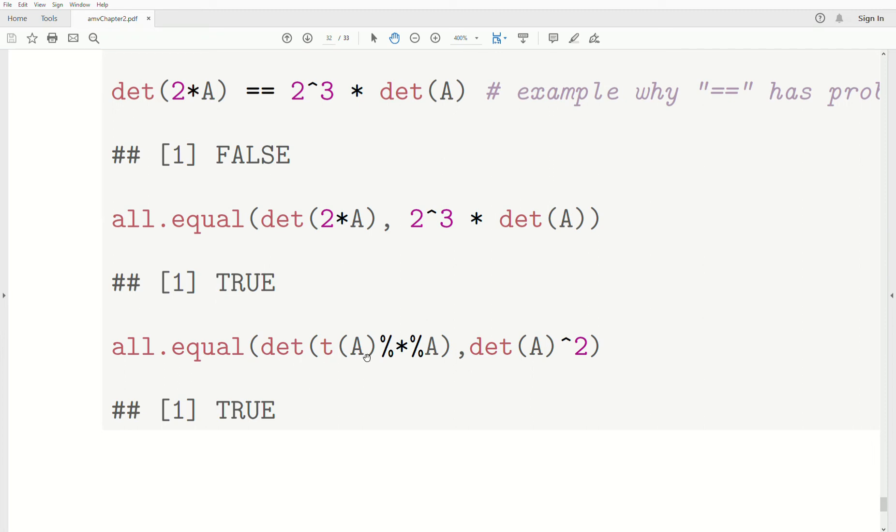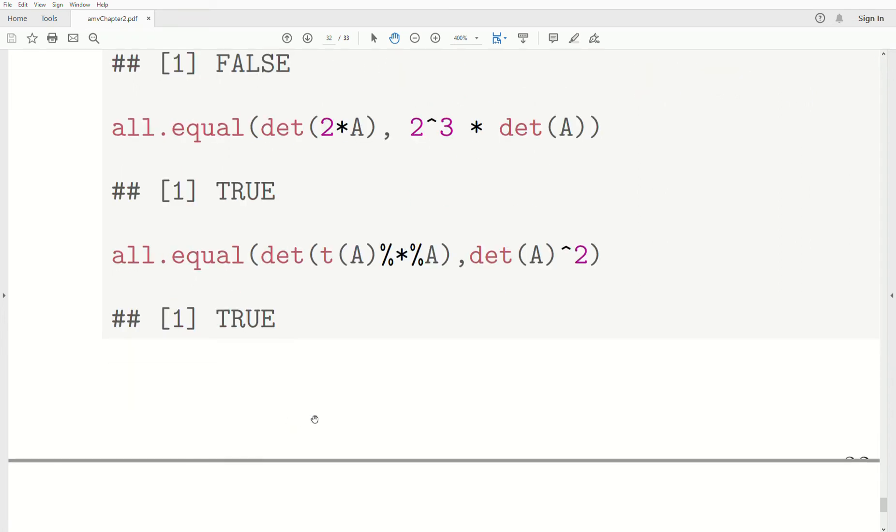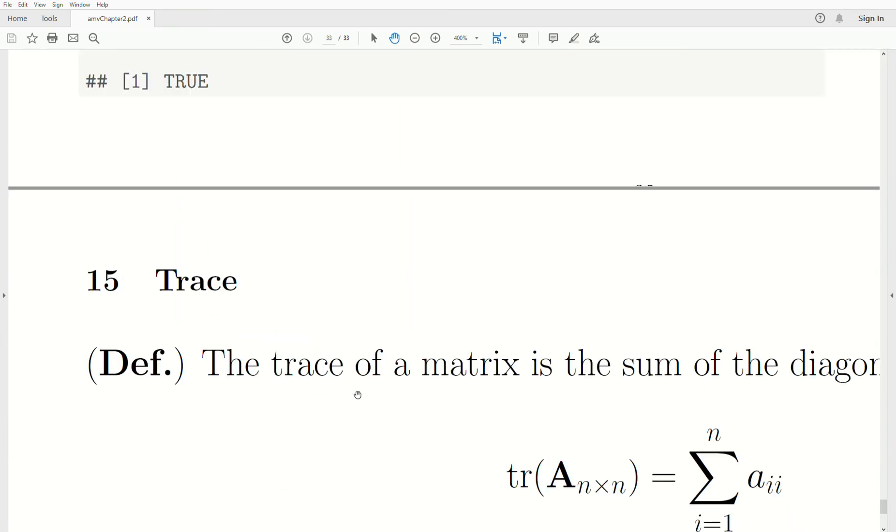Now, is the determinant of A^T*A the same as the determinant of A squared? And the answer is yes.